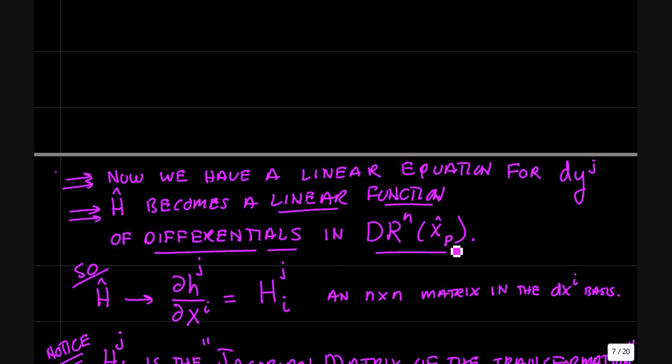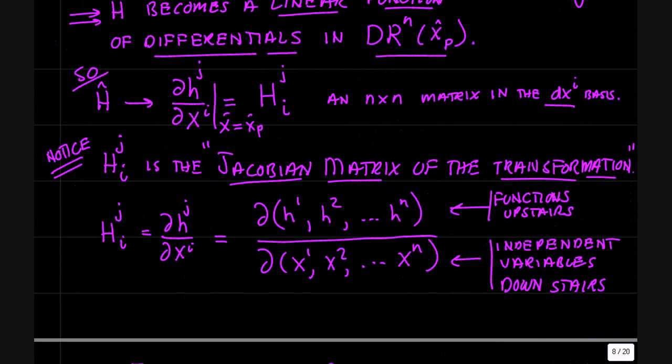We now have a linear equation for dy. And h has become a linear function of the differentials dx. So h is really represented by an n by n matrix. And I'll write this with an upstairs index and a downstairs index dh_j dx^i is equal to this n by n array. And we're evaluating this at the particular point x equals x_p. So this is an n by n matrix in the dx^i basis.